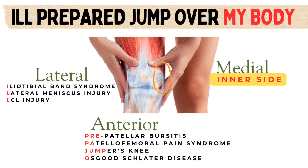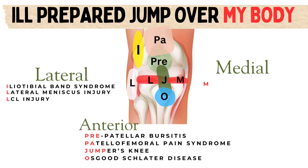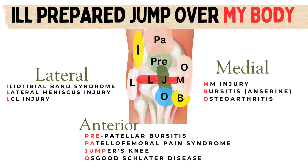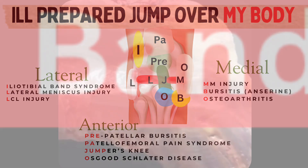Finally, 'my body' helps us remember the causes of medial or inner knee pain. Letter M in 'my' refers to medial meniscus tear, causing pain along the inner knee joint line. Letter B in 'body' reminds us of bursitis, specifically pes anserine bursitis, causing pain over the upper medial tibia just below the joint line. Letter O in 'body' represents osteoarthritis or OA, one of the most common causes of knee pain in middle-aged and older patients. Now let's go over each condition in detail.